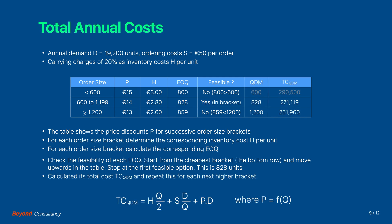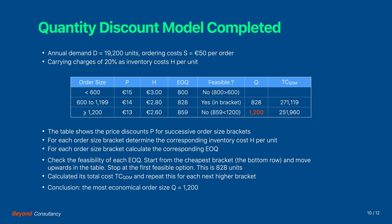The last step in the QDM process is to calculate the total cost for the first feasible economic order quantity and to repeat this for each next higher bracket. The total cost for the order quantity 828 is around 271,000 Euro. The next order size candidate is 1200 units, where the total cost becomes around 252,000 Euro. We conclude that the order quantity of 1200 units is the solution to this quantity discount model. This then concludes the QDM process.